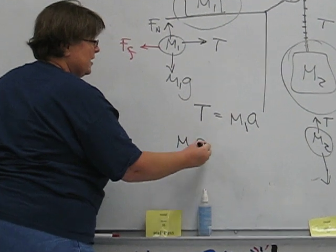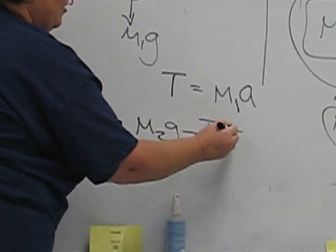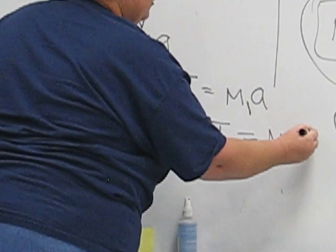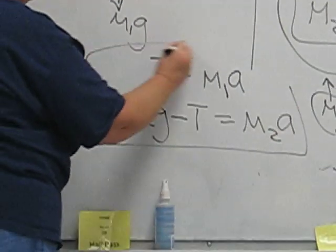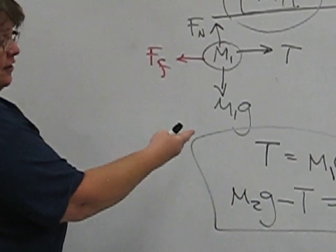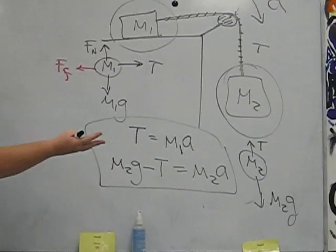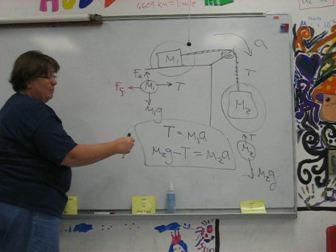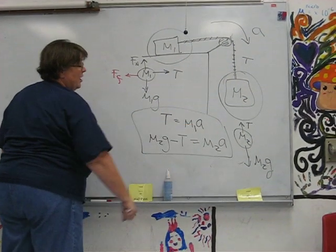So M2g minus the tension will tell you M2's acceleration. So what you've got here, if you know M1 and M2, you've got a two-equation, two-unknown, T and A problem. You don't know T, you don't know A.